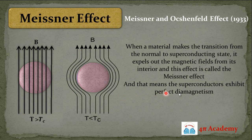The result of this effect is that superconductors exhibit perfect diamagnetism. As you know, diamagnetic materials oppose the externally applied magnetic field. So these superconducting materials behave as perfect diamagnetic materials. This is the explanation of the Meissner effect.